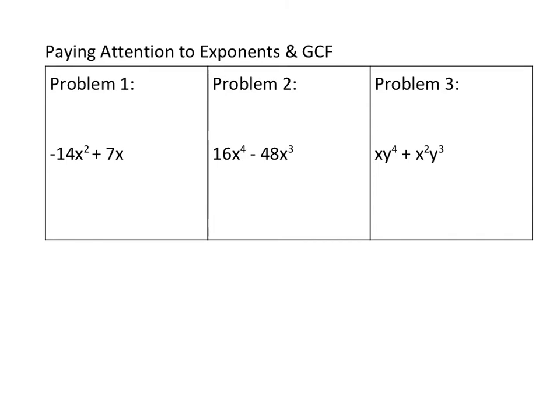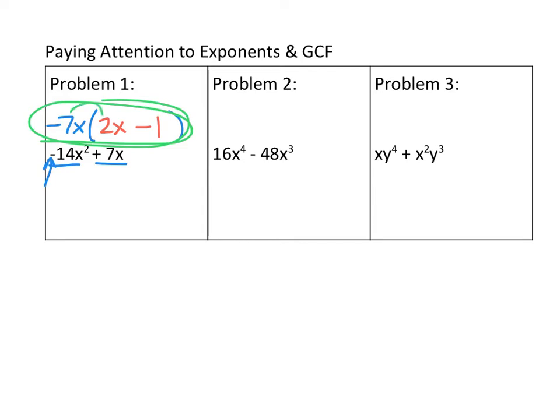Let's do a few trickier ones now that you have the concept. With negative 14x squared plus 7x: the numbers 14 and 7 both have a 7 as a factor. Because the expression starts with a negative, you put a negative with your front number, making it negative 7x. There's an x in each term, so x is also part of the GCF. Working through the distributive check, you should get 2x inside and minus 1, giving negative 7x times quantity 2x minus 1.